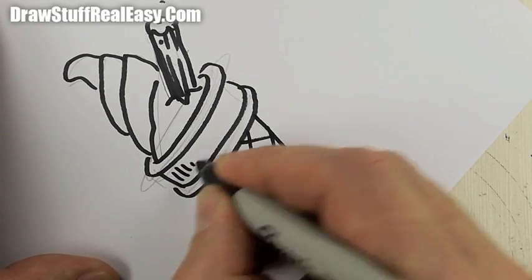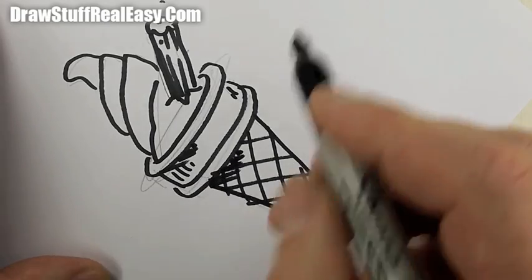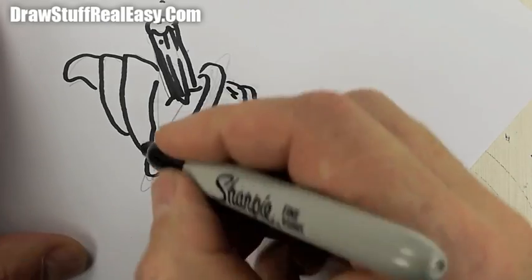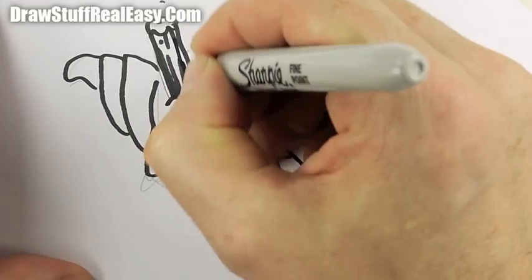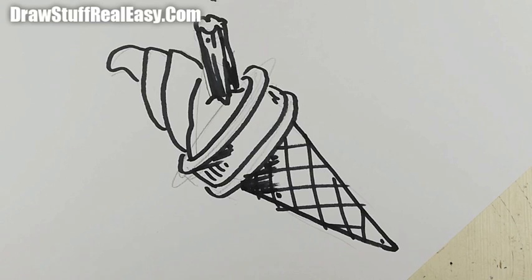Maybe you don't have ice cream cones that look like this around the world. If you come to England and you go to the seaside, you're going to find a number 99 cone that looks just like that.